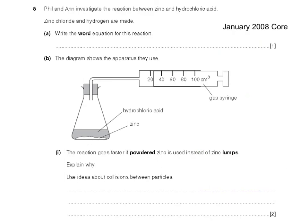And here's a past paper question. Phil and Anne investigate the reaction between zinc and hydrochloric acid. Zinc chloride and hydrogen are made. Write the word equation for this reaction.